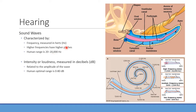Intensity or loudness is measured in decibels. The normal optimal range is 0 to 80 decibels; exceeding that causes long-term ear fatigue and damage. Importantly, the frequency of a sound wave determines how far it travels within the cochlea: higher-frequency sounds travel a shorter distance and remain near the base, while lower-frequency sounds travel farther toward the apex of the cochlea.